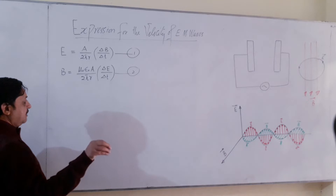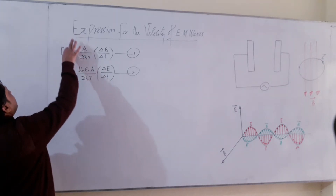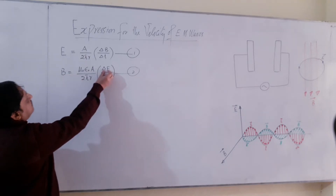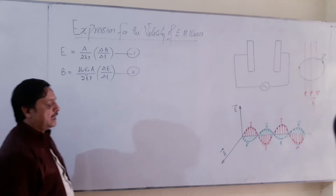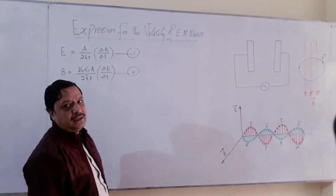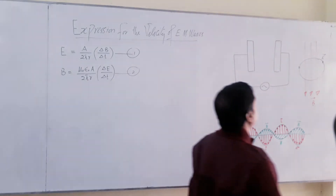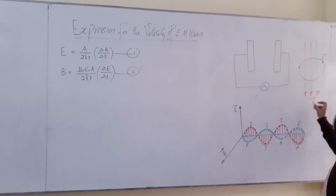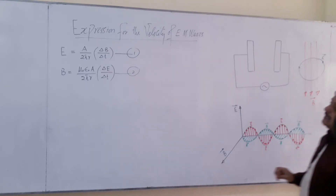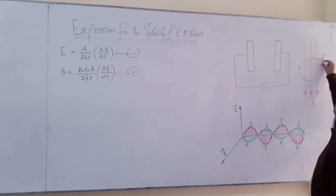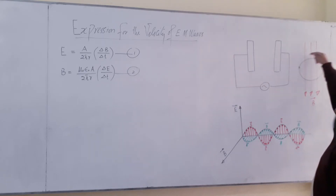This is called an induced electric field. Remember, these two induced electric and magnetic fields are perpendicular to each other at each and every point. If this loop is placed in a varying magnetic field, that varying magnetic field gives you an induced electric field, and this magnetic field is perpendicular to the induced electric field at each point.